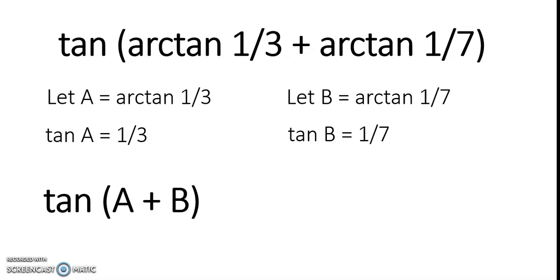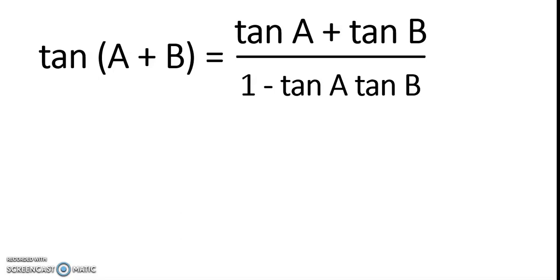The sum identity for tangent is tangent of A plus B equals tangent of A plus tangent of B all over 1 minus the product of tangent of A and tangent of B.